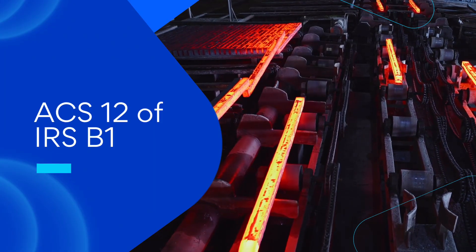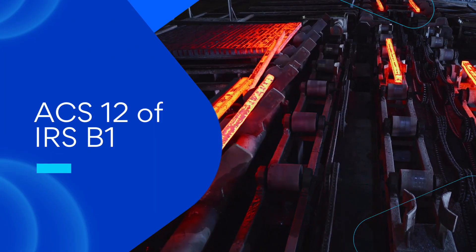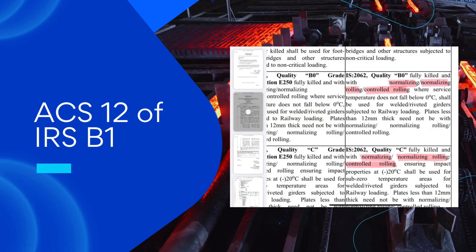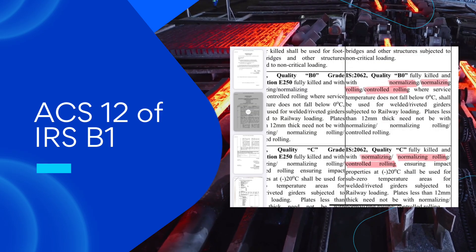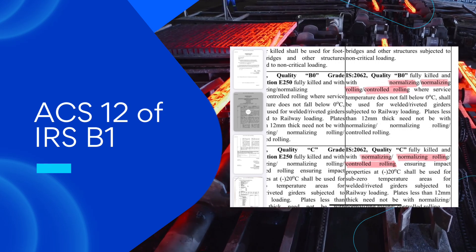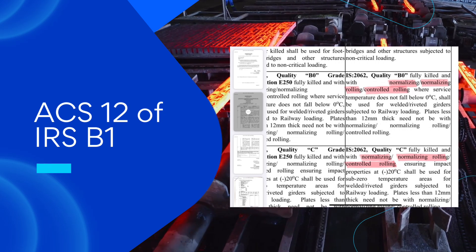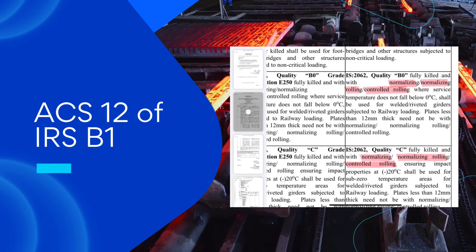Correction slip number 12 of IRS B1 prescribes the use of normalizing, or normalizing rolling, or controlled rolling structural steel for quality B, 0, BR, and C. These qualities are primarily used in the construction of railway bridges, highway bridges, and other structures subjected to critical loading.